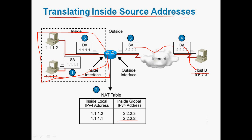In the internet, the destination IP address is 9.6.7.3. The destination replies to 2.2.2.2, and the packet comes back to the router. The router checks the NAT table again — 2.2.2.2 is translated back into 1.1.1.1, and the packet returns inside the network with the original private IP address.